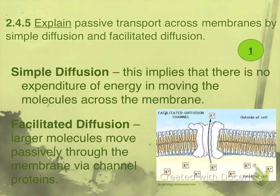Our last assessment statement, 2.4.5, asks us to explain passive transport across membranes by simple diffusion and facilitated diffusion. Passive transport requires no energy. Simple diffusion involves no expenditure of energy and no membrane protein — the molecule is small enough to move directly across the plasma membrane through the lipid bilayer, driven by diffusion from an area of higher concentration to lower concentration. It is therefore called simple diffusion.